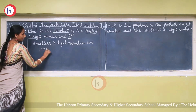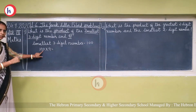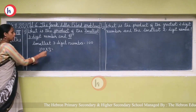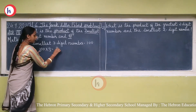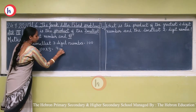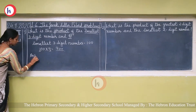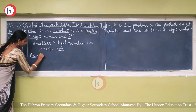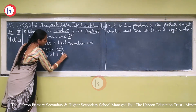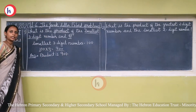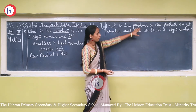So the product is 100 multiplied by 9. Nine multiplied by one is nine, and two zeros follow — so the answer is 900. The product is nine hundred.